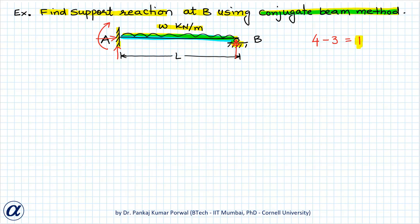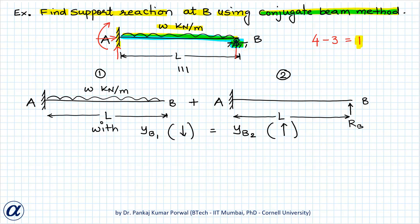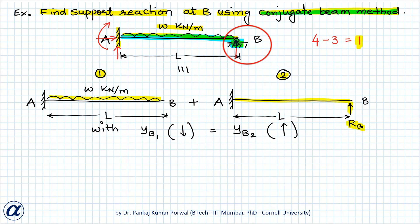To use the conjugate beam method, I will break the given beam into two statically determinate structures by removing the support reaction at B. In structure 1, support B is removed and the original loading is present. In structure 2, the geometry is identical to the given beam but the original loading is not applied; instead, a support reaction of magnitude RB is applied at B.